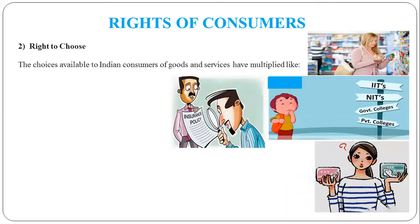The second consumer's right is the right to choose. Right to choose means the right to select. In the market, there are different varieties of goods and services available. There are many products — like in telecom: Vodafone, Airtel, Jio.